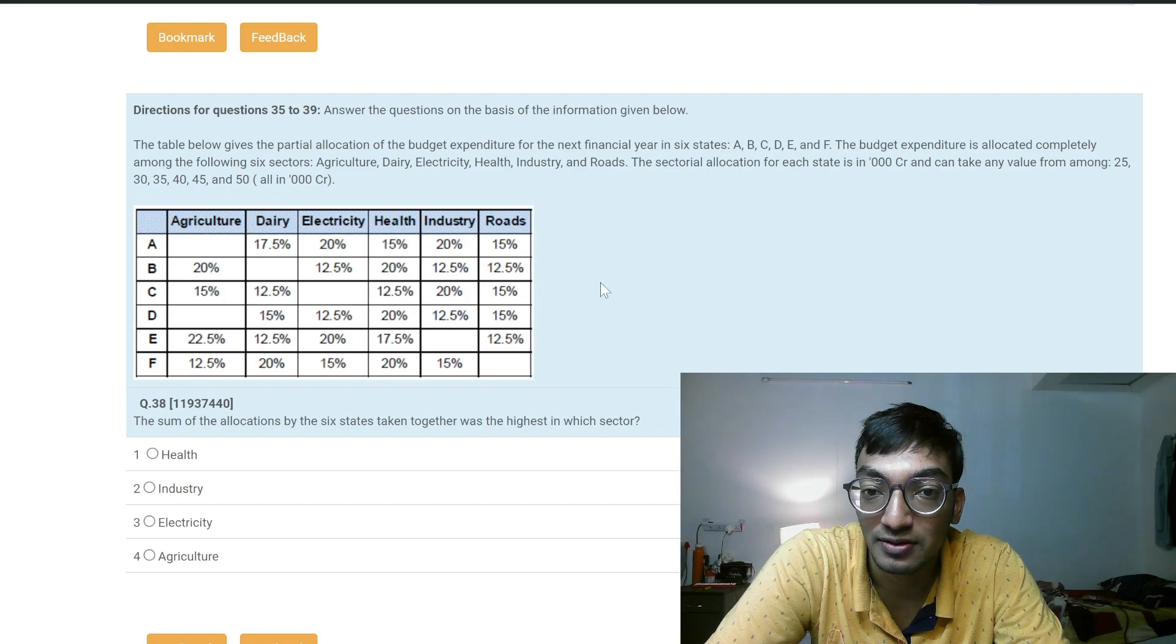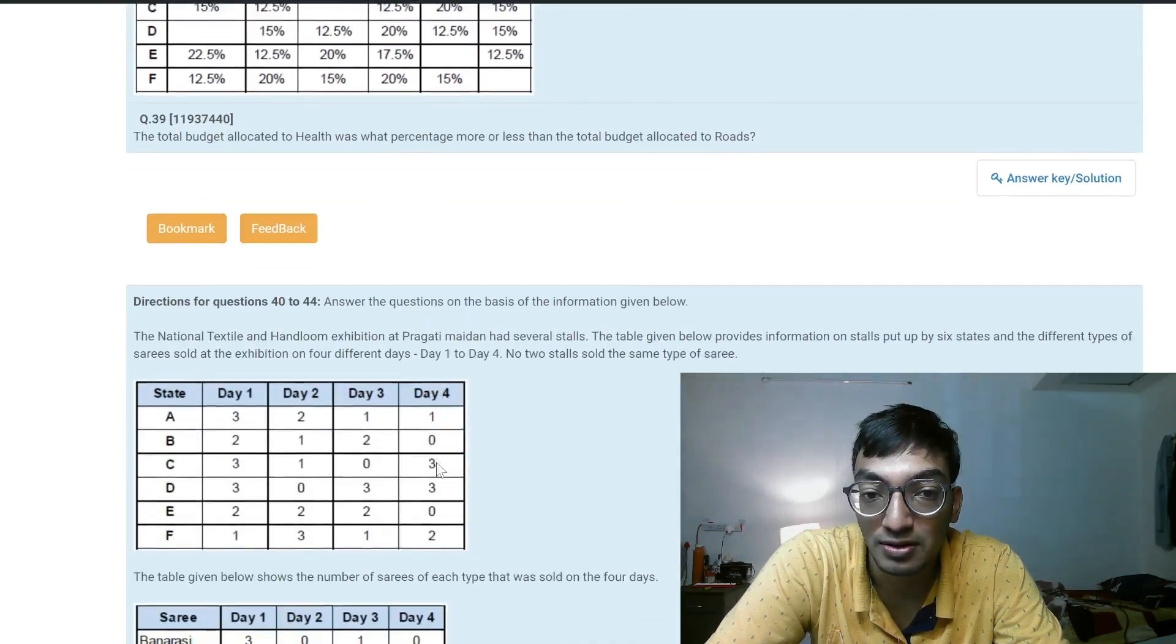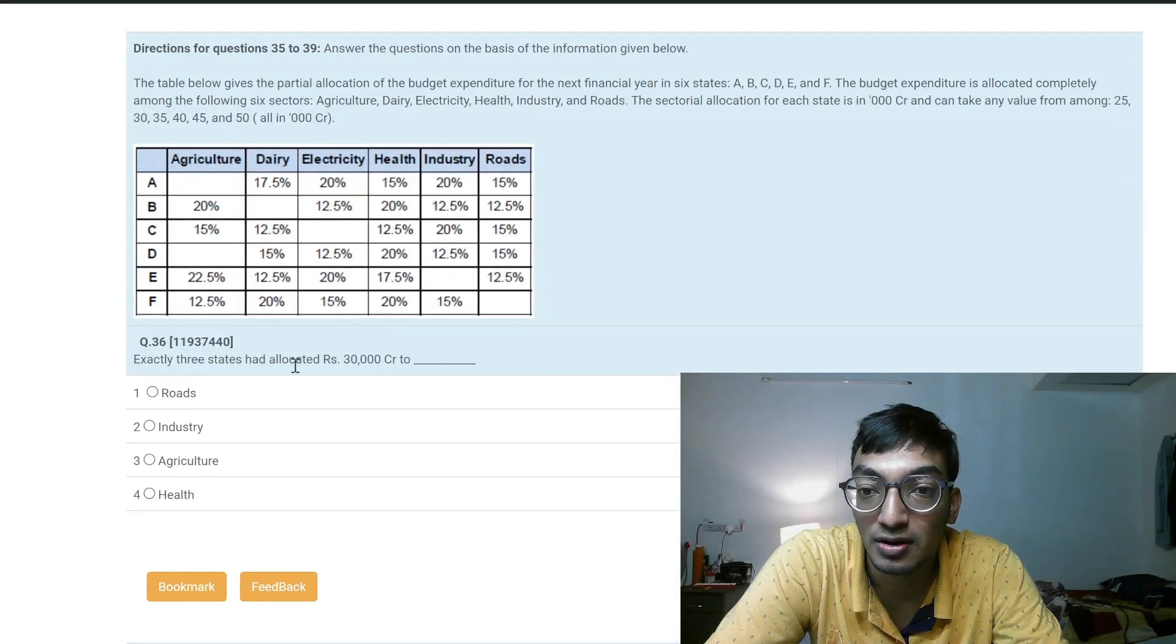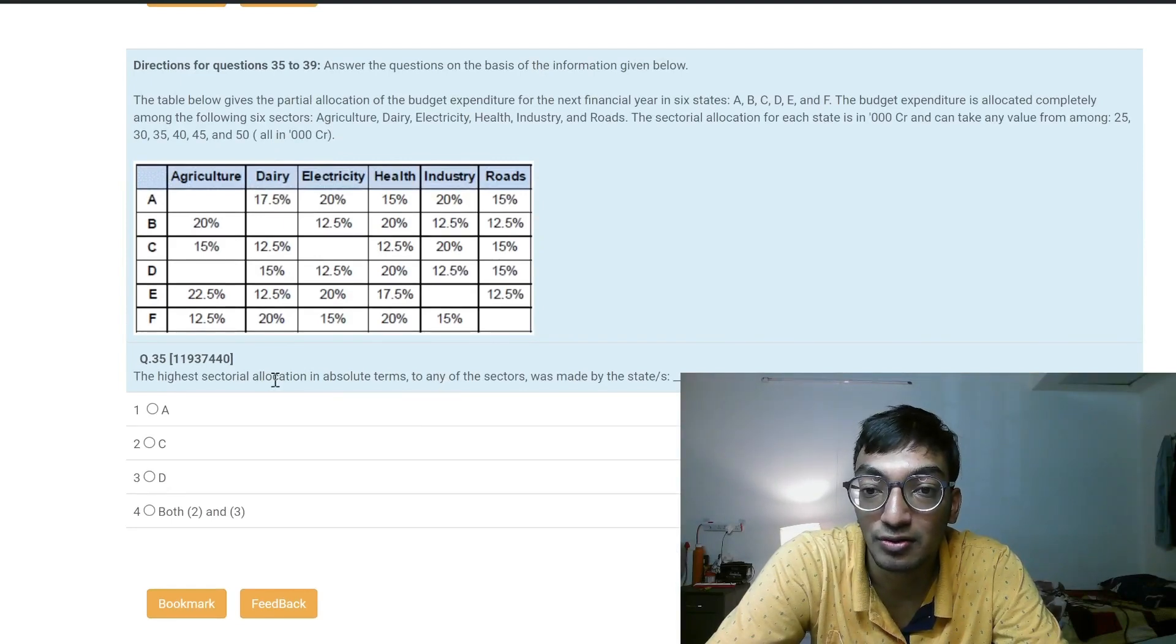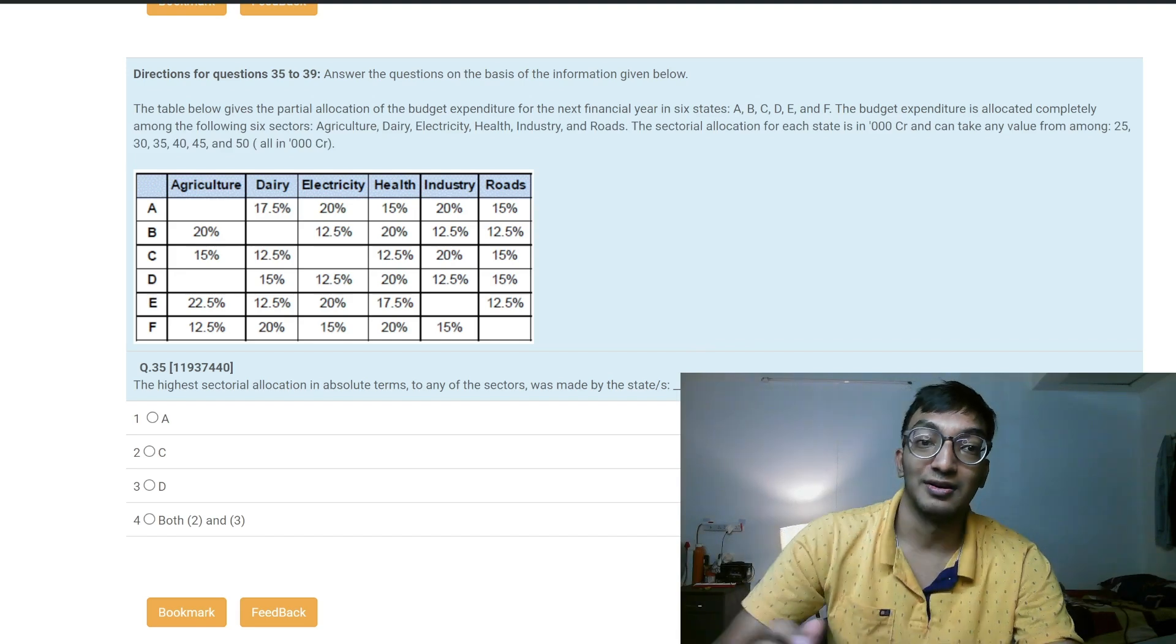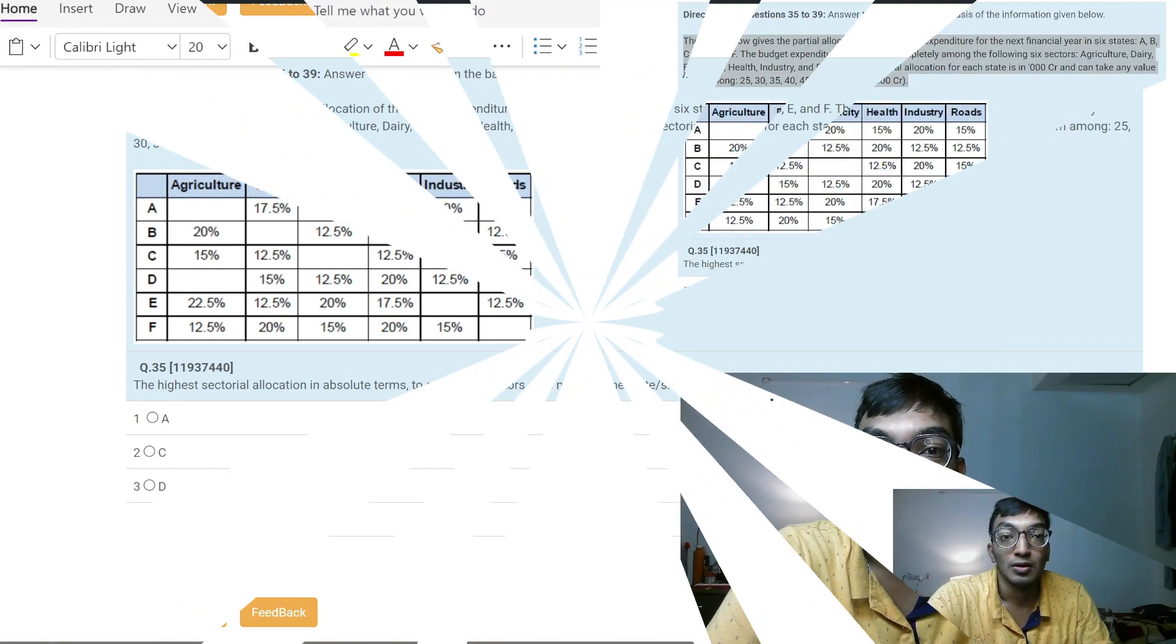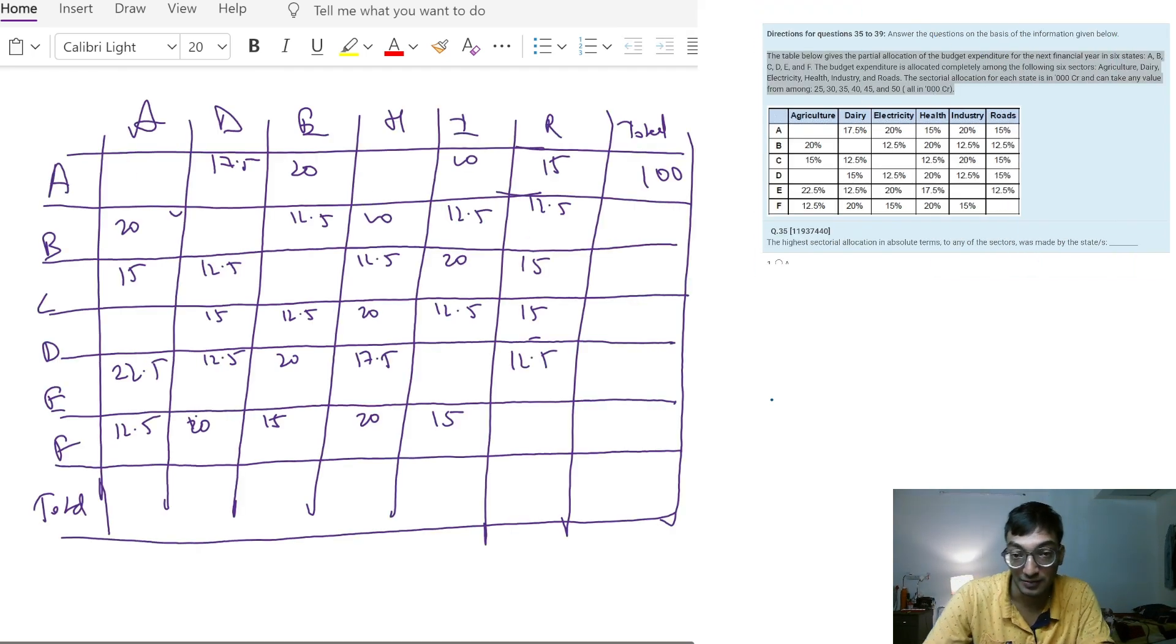Let me see. The sum of allocations by six states, highest in which sector seems very easy. The total allocated budget - is it a new question? Exactly three states have allocated 30,000 crore, and the highest allocation in absolute terms to any sector. So these are the five questions. I have made the table for you.